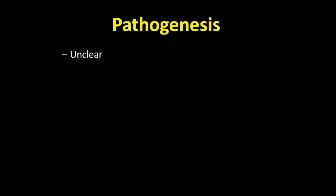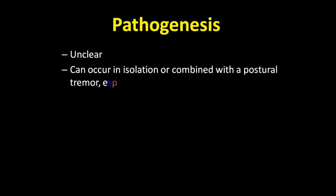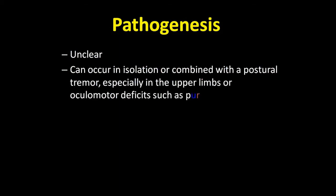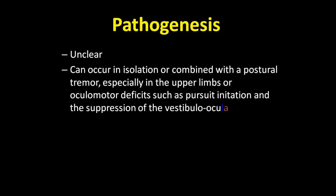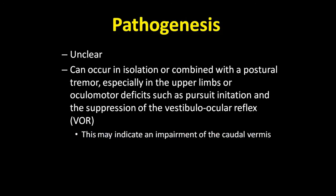It can occur in isolation or combined with a postural tremor, especially in the upper limbs, or with oculomotor deficits such as pursuit initiation and suppression of the vestibulo-ocular reflex. This may indicate that there is an impairment of the caudal vermis.